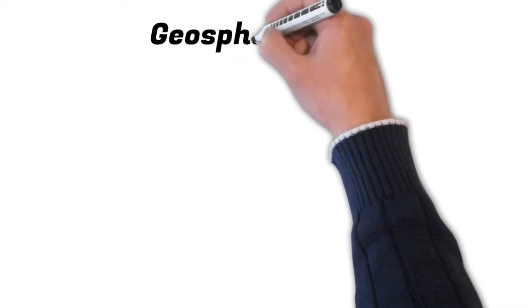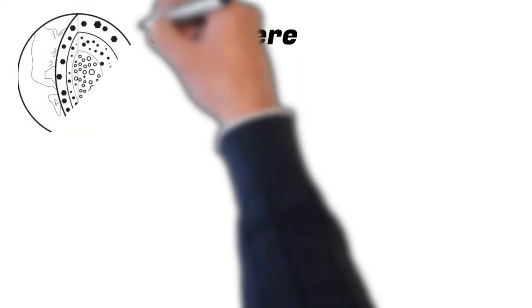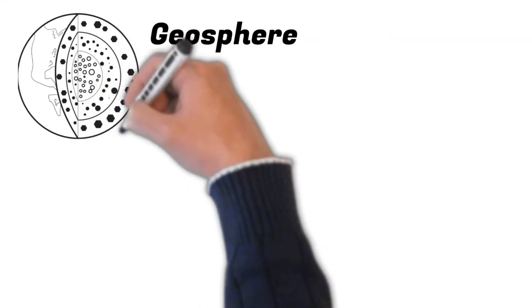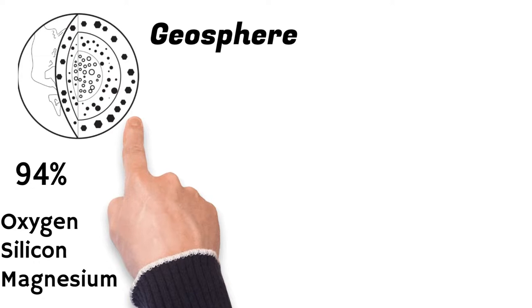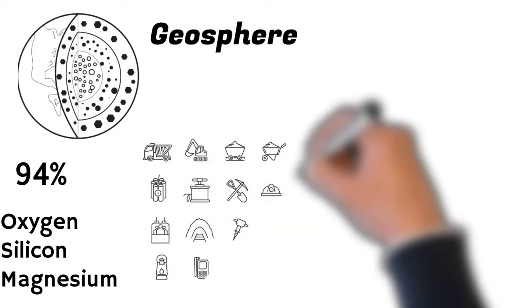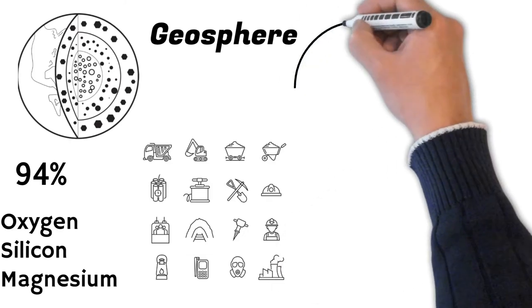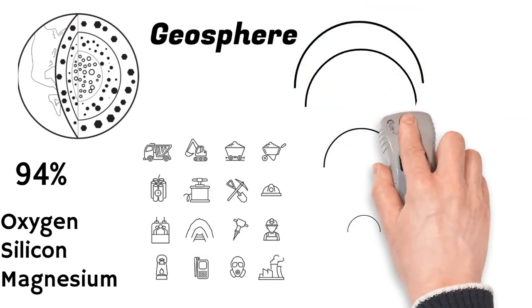The second sphere is Geosphere. Geosphere is the solid Earth that includes the continental and ocean crust as well as various layers of the Earth interior. 94% of the Earth is composed of elements Oxygen, Silicon and Magnesium. The Geosphere is not static but its surface which we call the crust is in constant state of motion and we also mine minerals from the Geosphere.